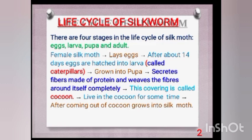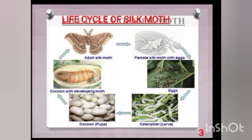The life cycle of the silkworm has four stages. First, the female silk moth lays eggs. Those eggs hatch into larvae (caterpillars). The larva then grows into a pupa, also called a cocoon. From the cocoon, ultimately the silk moth is produced.